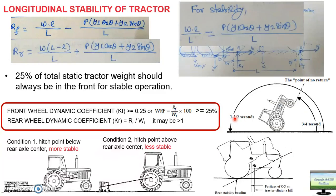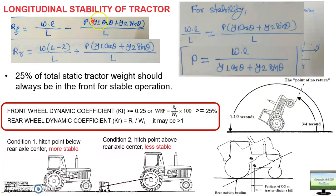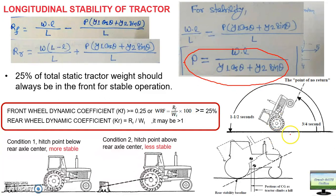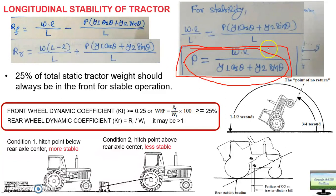To prevent this, for stability the stabilizing moment component must be equal to or greater than the overturning component. There is a critical value of P: if the tractor operates at that P or less, operation is stable; if P exceeds that value, the tractor will definitely overturn. This P value is derived from the earlier formulas.